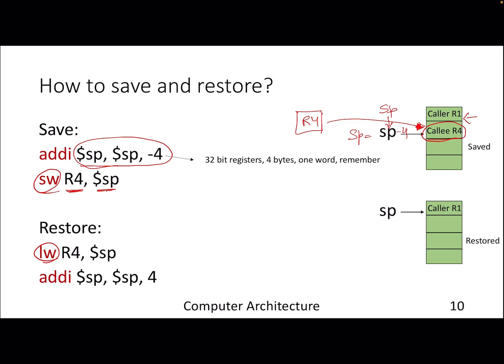Once you are at the new SP, you can store the content of register R4 at that memory address. The key point is: we are not storing anything in the register anymore — we have migrated the content of register R4 into this particular memory location. When you want to restore at the end of your function call, you load from that memory address back into register R4.